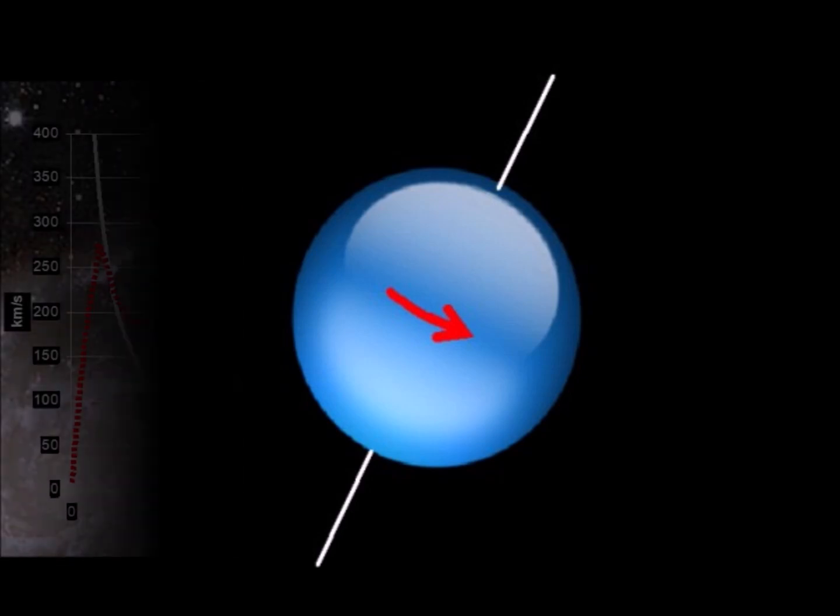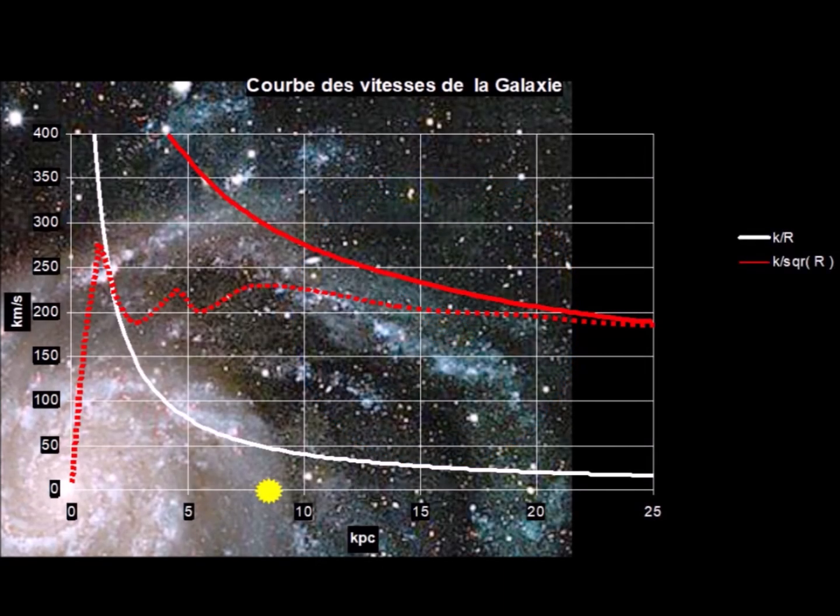These properties are explained in the book. They explain in particular the non-Keplerian curve of galaxies.